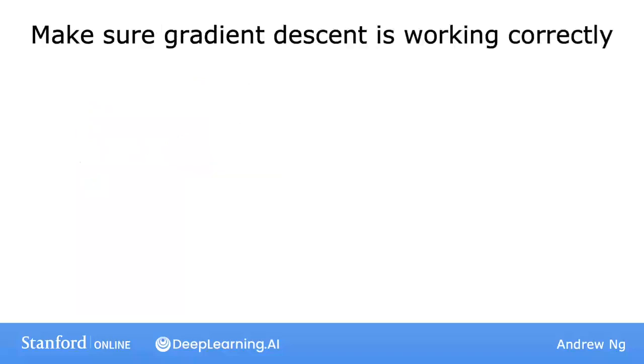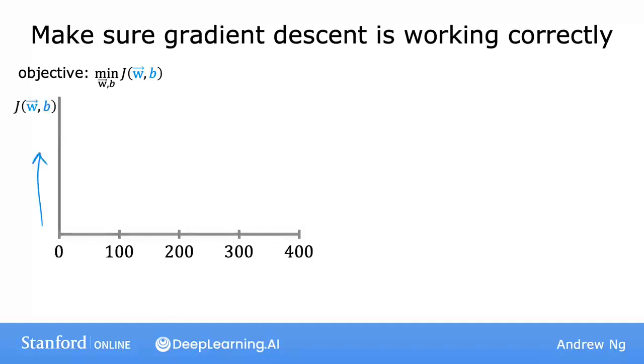Here's something that I often do to make sure that gradient descent is working well. Recall that the job of gradient descent is to find parameters w and b that hopefully minimize the cost function j. So what I'll often do is plot the cost function j, which is calculated on the training set. And I'll plot the value of j at each iteration of gradient descent.